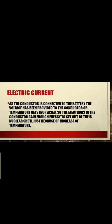As the conductor or metal plate is connected to a battery, voltage is provided to the conductor, or the temperature gets increased. As the voltage provided by the battery increases, the electrons in the conductor gain enough energy to get out of their shell around the nucleus.